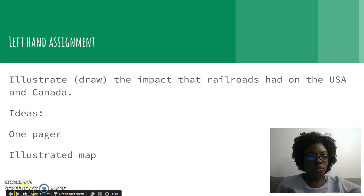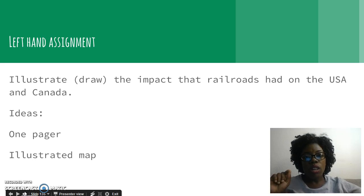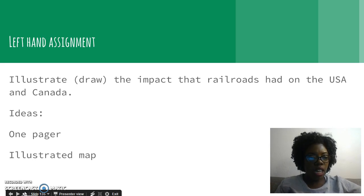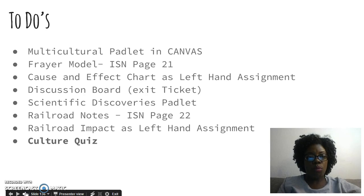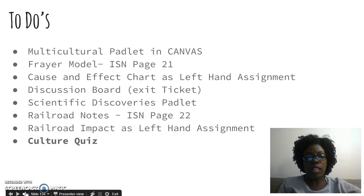Let's review. First, you do the Padlet. Then you watch the video and add to your notes in your ISN. Make sure you double-check that you have done every single thing on this list before you think you are done. At the bottom of this list is a Culture Quiz, and I will upload a quiz for you in your Canvas module so you can take that. As long as you've done everything you were supposed to do, you should be fine on the quiz.